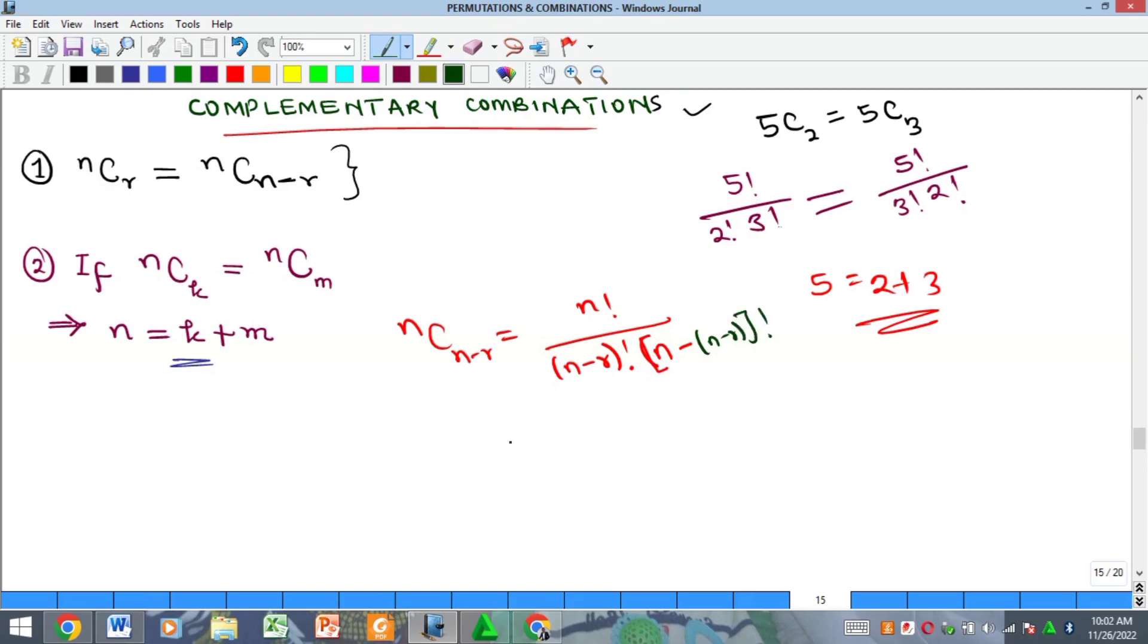My r is n-r, so I put that into bracket then factorial. So this is actually equal to n! over (n-r)! and if you open this bracket you have n minus n plus r, and all is in factorial. So of course this will cancel this, so you only have r!, which is actually the definition of nCr. So you see the two of them are actually equal.